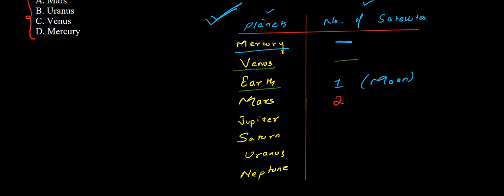Then we have Jupiter, being the largest planet of the solar system — Jupiter has a total of 16 satellites. Now Saturn, being smaller in size than Jupiter, still has one extra satellite than Jupiter, that is 17. Then Uranus has three less than Saturn, which is 14. And Neptune has only two, just like Mars. So here we have noted down all the number of satellites of all the planets.